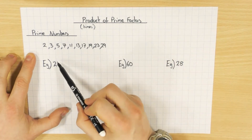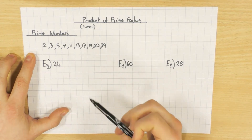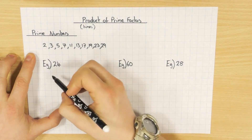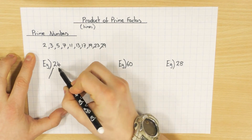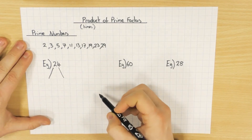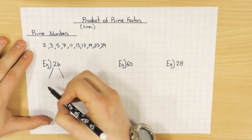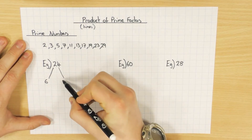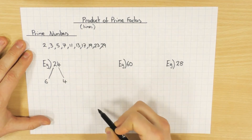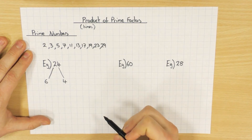I'm going to break 24 down into a product of its prime factors, and this is how you do it. Draw yourself two branches coming off the number and ask yourself: what two numbers multiply to get 24? There are a couple you could choose — I'm going to go with 6 and 4. It doesn't matter which ones you choose; you all end up with the same answer anyway.